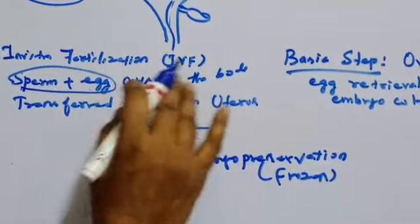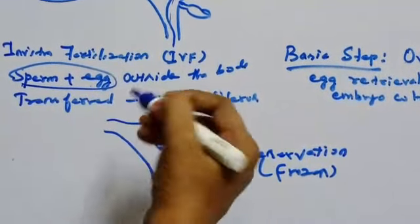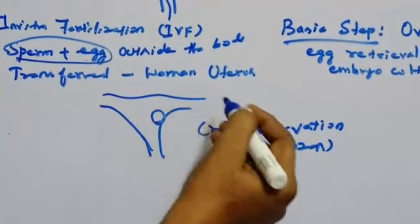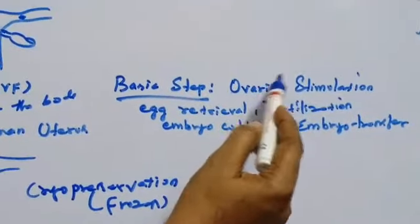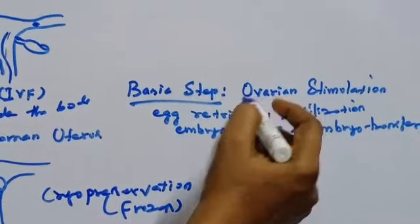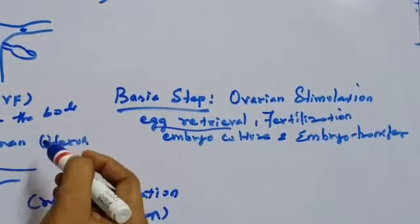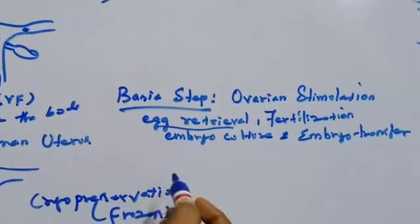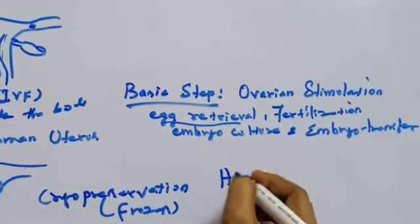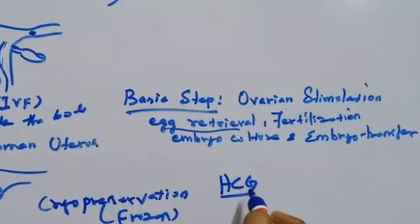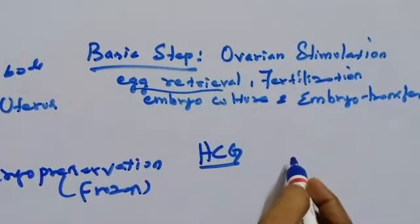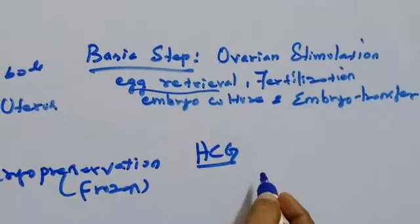IVF is usually used to treat women with blocked, damaged, or absent fallopian tubes, but today IVF is used to treat many causes of infertility. The basic steps in IVF are: ovarian stimulation, egg retrieval, fertilization, embryo culture, and embryo transfer. Egg retrieval is done by minor surgery or under general anesthesia using ultrasound guidance. First, a human chorionic gonadotropin injection is given, and 34 to 37 hours after that, the eggs are collected. Sperm preparation is also done at the same time.